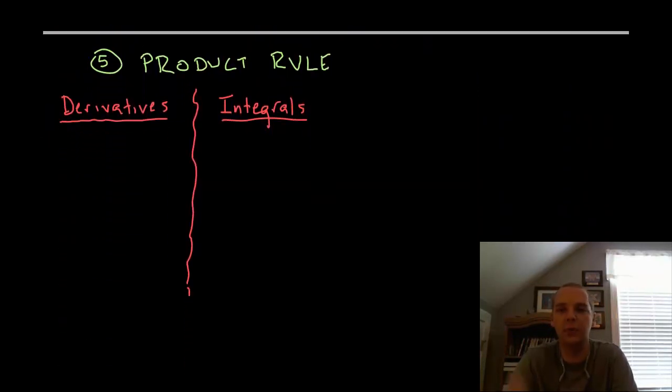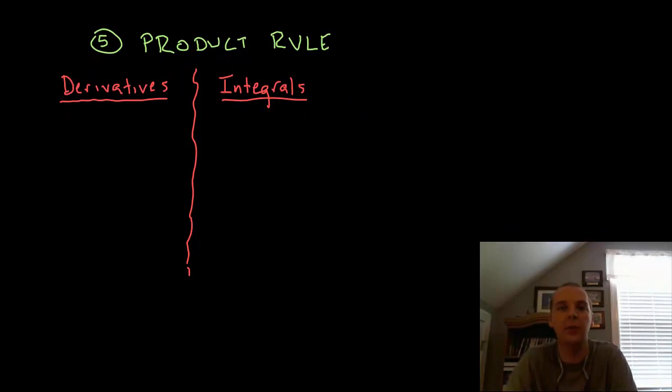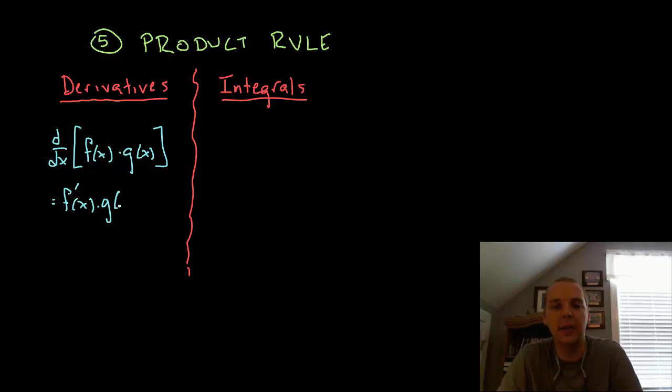The product rule is the next popular derivative rule that we use all the time. We say that the derivative of f of x times g of x is 100% not f prime times g prime. It's very important to realize you cannot just differentiate these two expressions like you did when it was a sum. There was an actual product rule. It looks something like this.